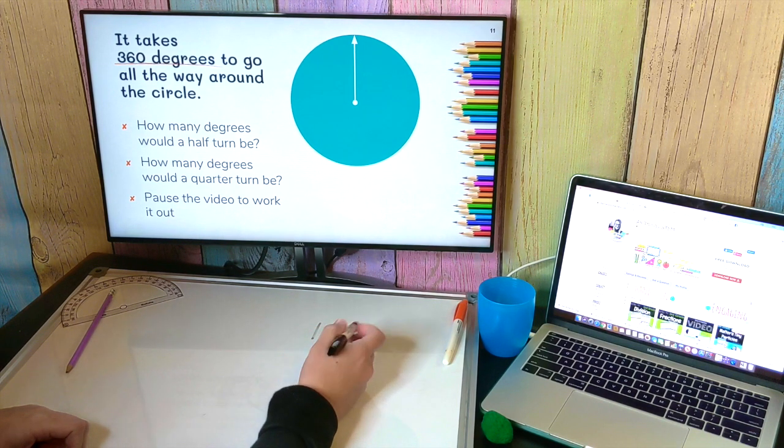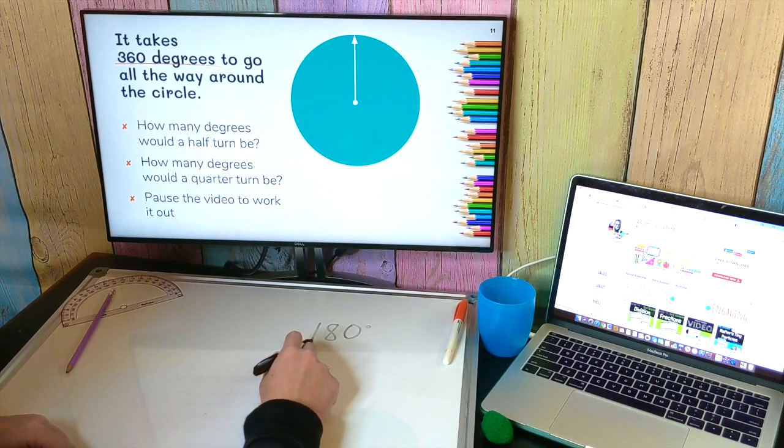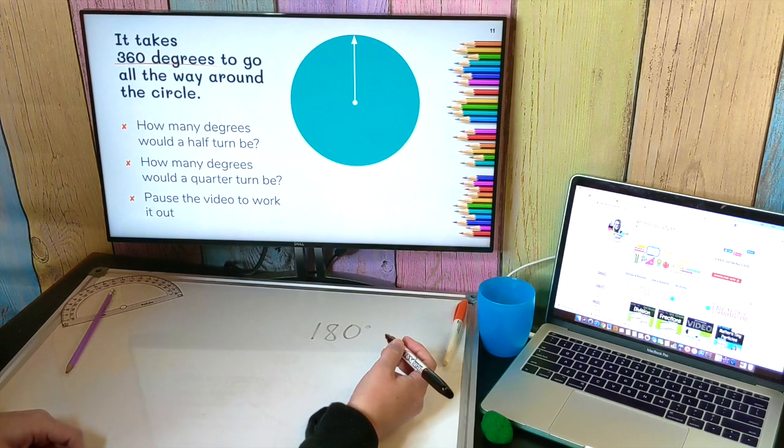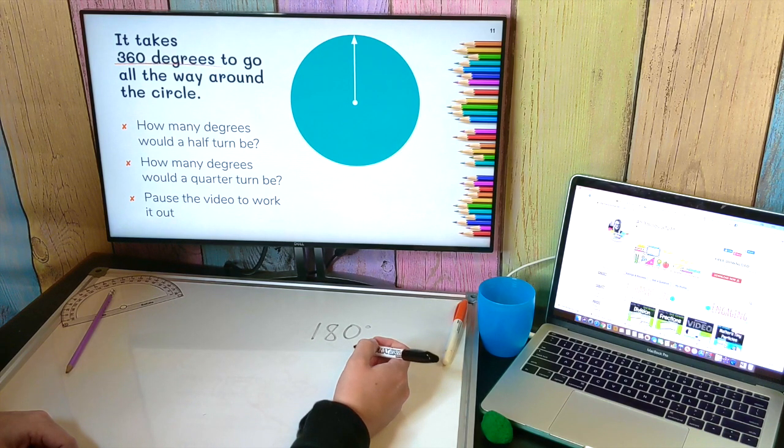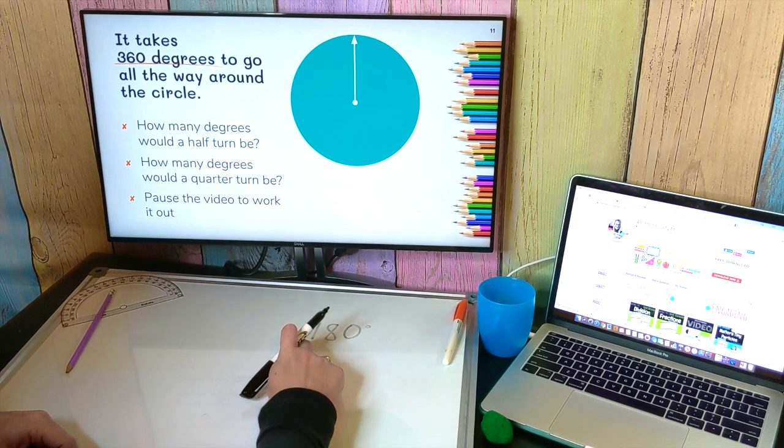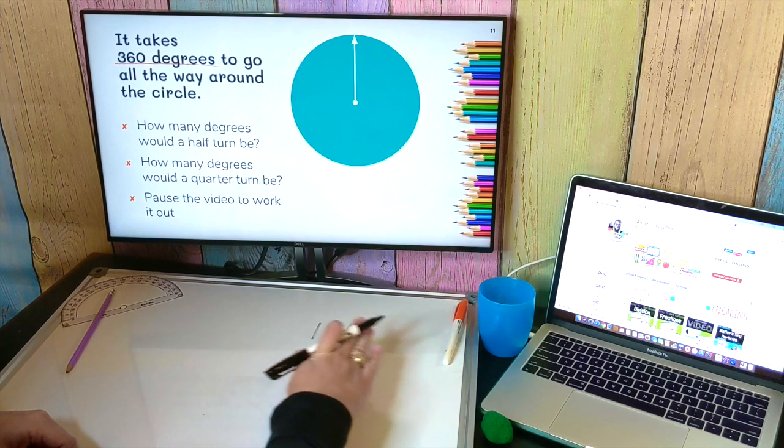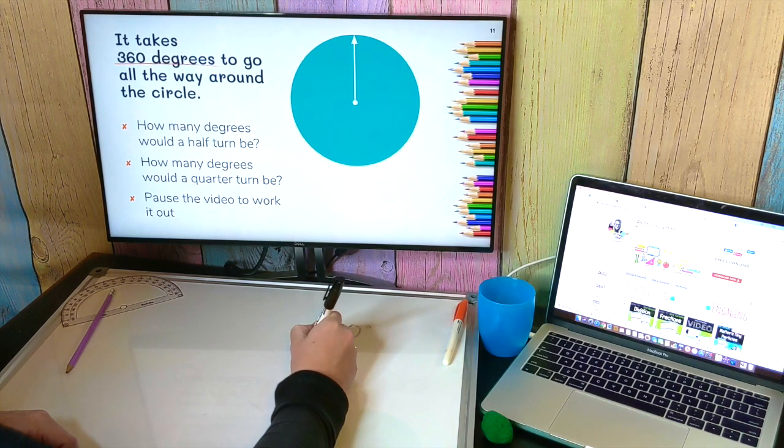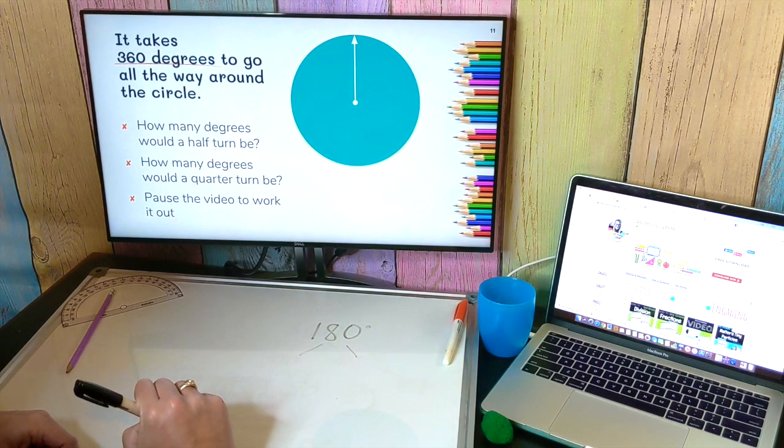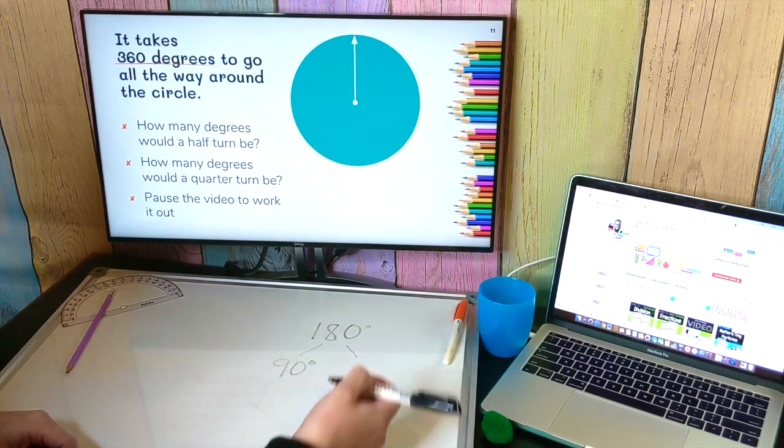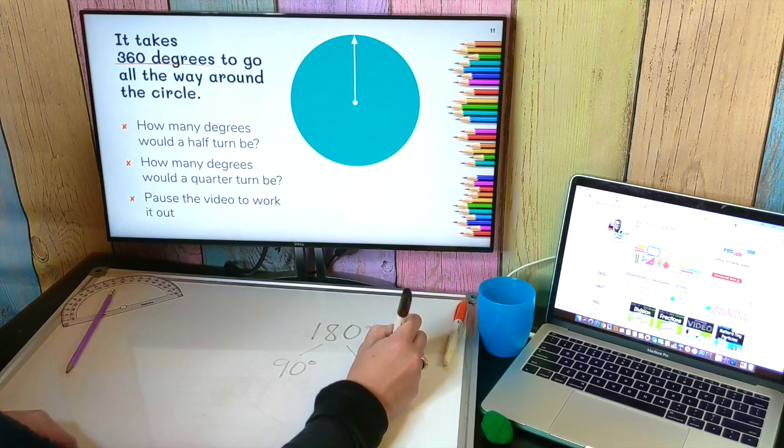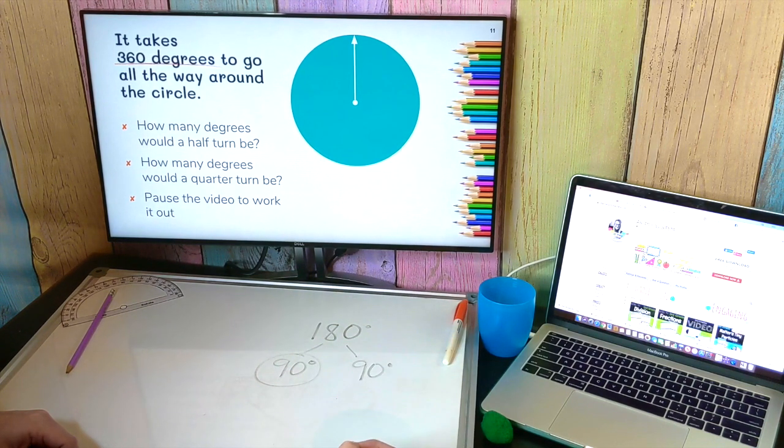I need to divide 180 into two equal parts. Well, I know that 180 is the same as having 18 tens. So I know that half of 18 is 9. So instead of having 18 tens, if I divide 18 tens into two equal groups, I would end up with nine tens in each group. Nine tens is 90. So I know a quarter turn is 90 degrees.